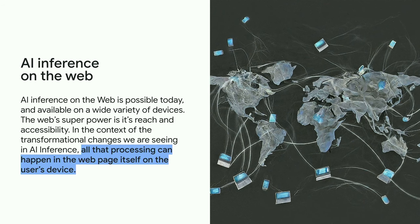AI is transforming the way we interact with technology. This year, Chrome released generative AI features, including creating custom themes or helping you write a first draft of text. AI can enrich web applications themselves. Today, a web page can embed intelligent components for vision, like picking out faces or recognizing gestures, for audio classification, or for text language detection. In the last year, we've also seen generative AI take off, bringing with it really compelling demos of large language models on the web. AI inference is available on the web today across devices, and AI processing can happen in the web page, leveraging the hardware on the user's device.